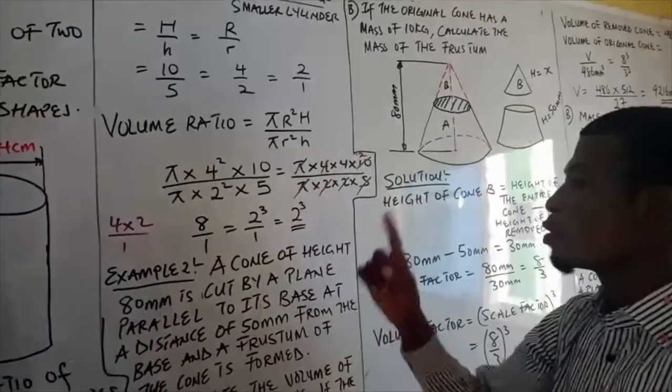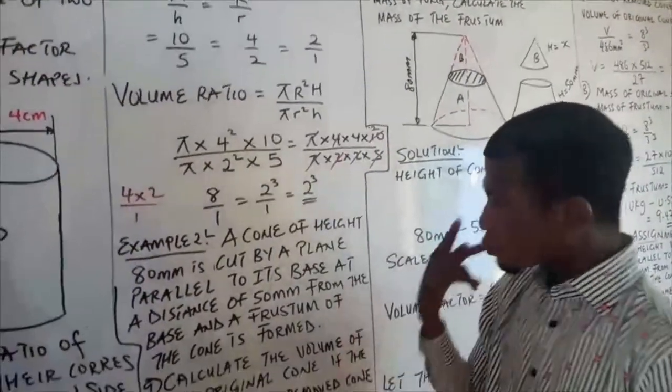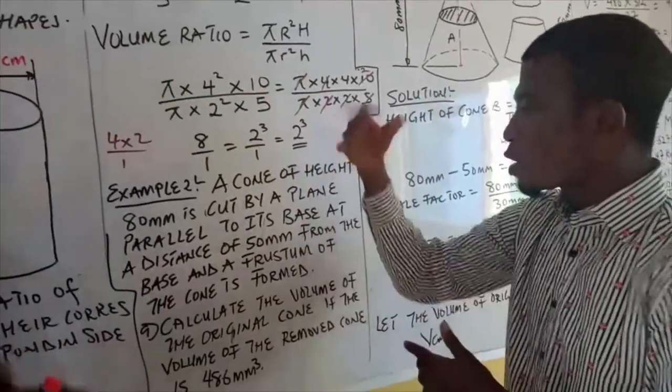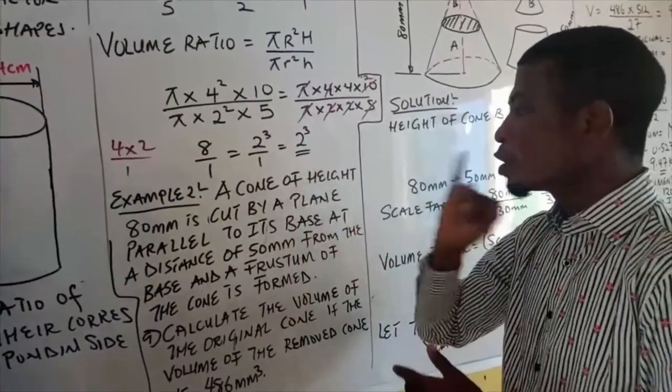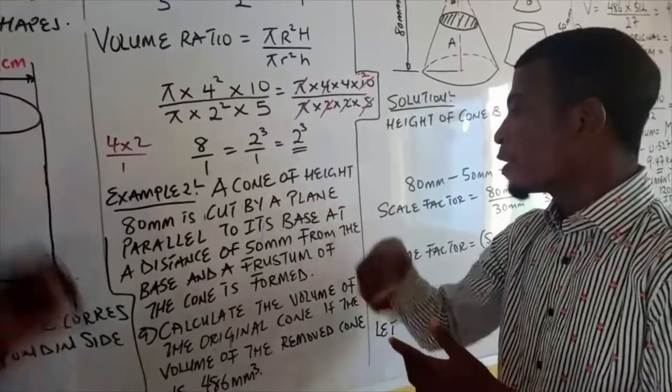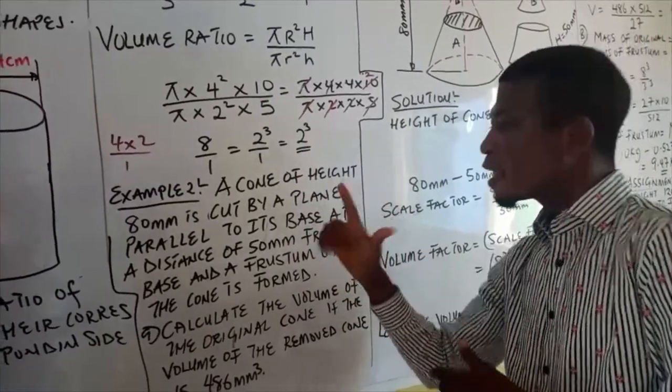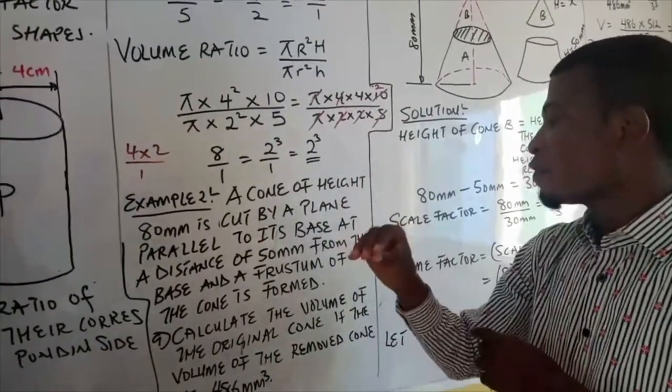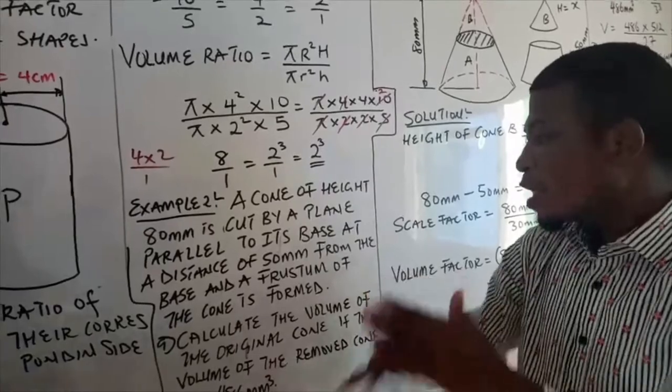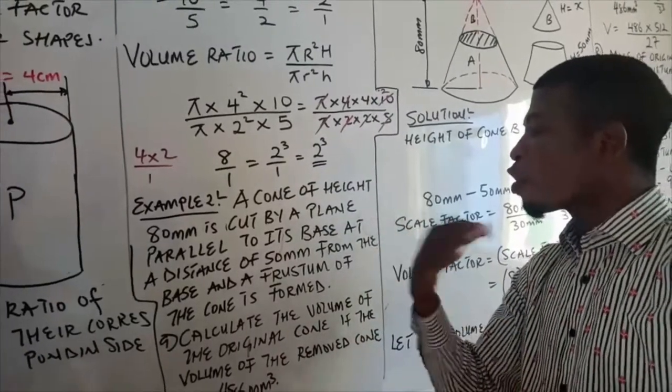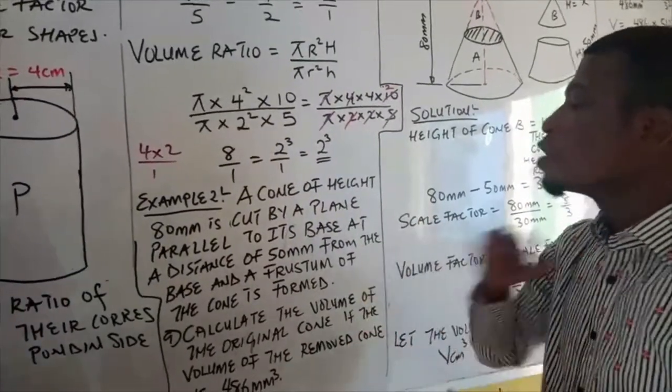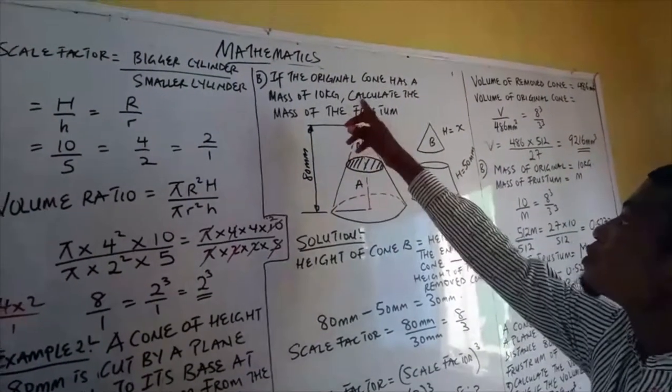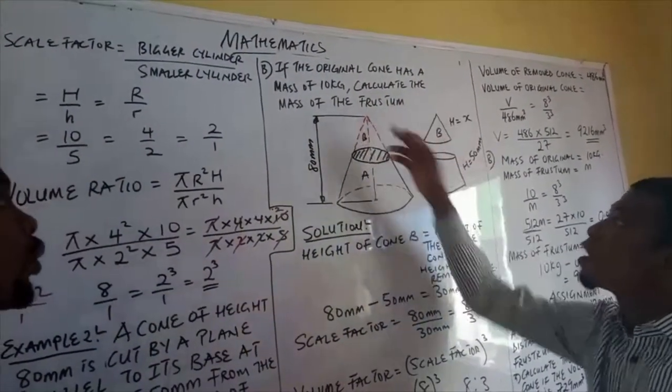Let's look at this last example. A cone of height 80 millimeters is cut by a plane parallel to its base at a distance of 50 millimeters from the base and a frustum of the cone is formed. Calculate the volume of the original cone if the volume of the removed cone is 486 millimeters cubed. If the original cone has a mass of 10 kilograms, calculate the mass of the frustum.